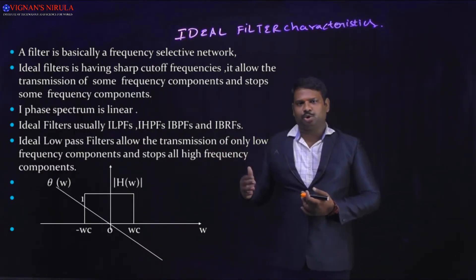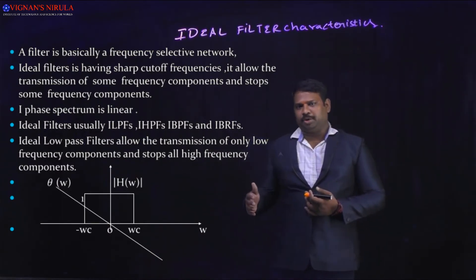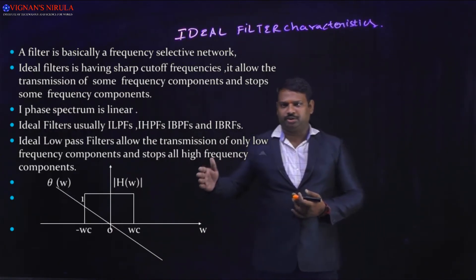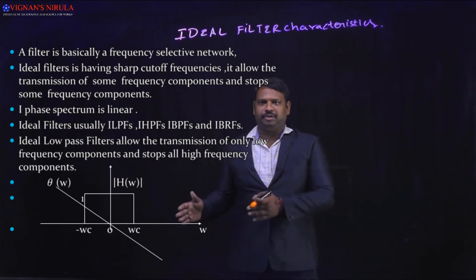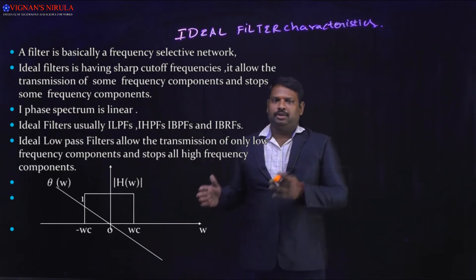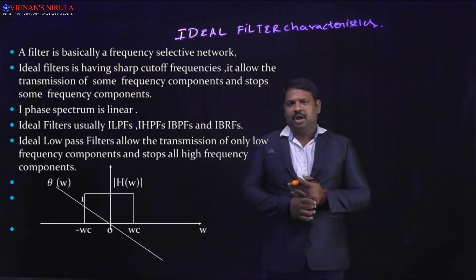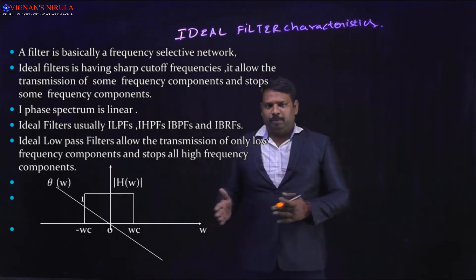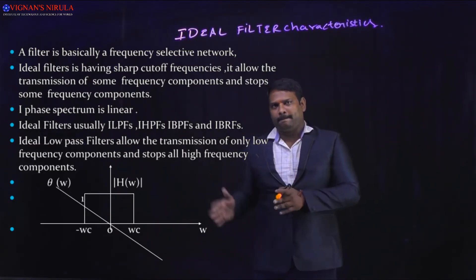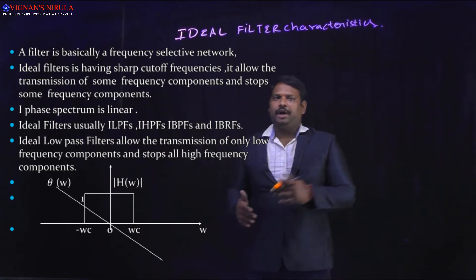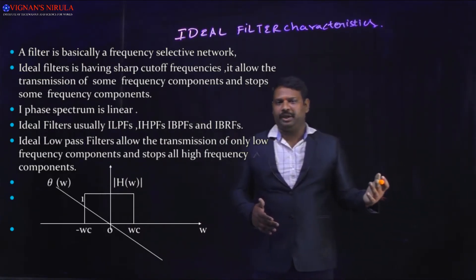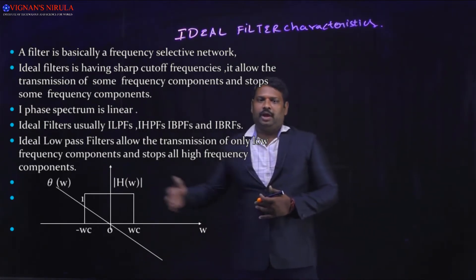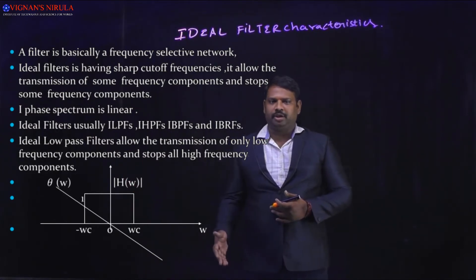In the ideal low-pass filter, which allows the transmission of only the low frequency components and stops all the other higher frequency components, the magnitude |H(ω)| equals one from minus ω_c to plus ω_c. That means for this particular frequency range, those frequencies will be passed, and beyond ω_c all the frequencies will be stopped. Below ω_c all low frequencies are passed, and above ω_c all high frequencies will be attenuated.